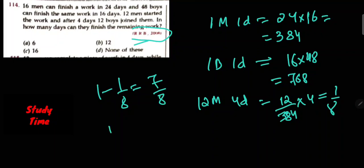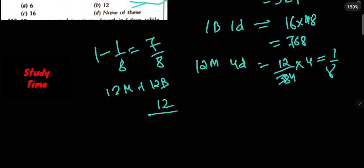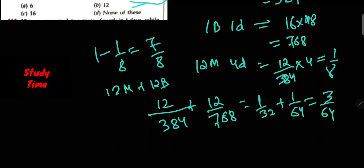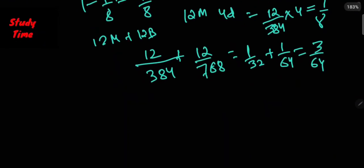Now 12 men plus 12 boys, one day work. 12 upon 384 plus 12 upon 768 equals 1 upon 32 plus 1 upon 64 equals 3 upon 64.